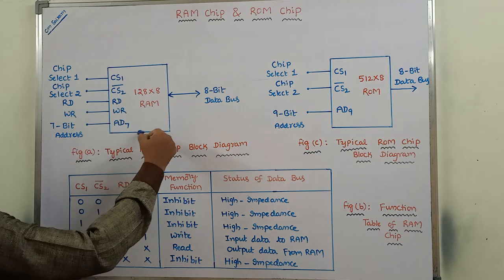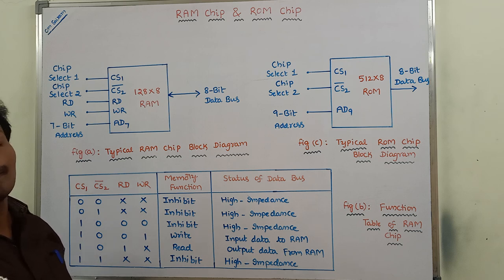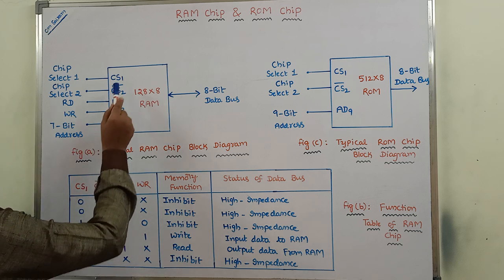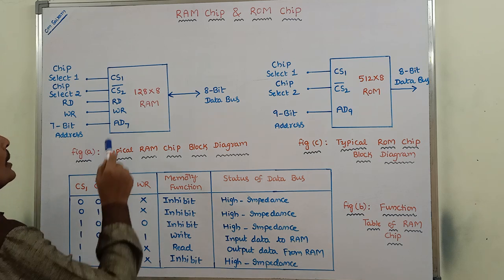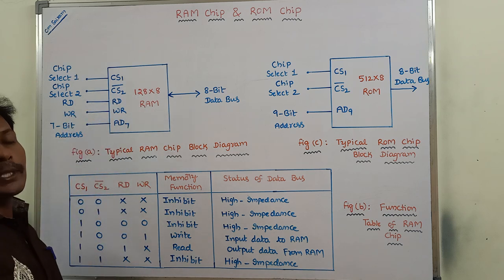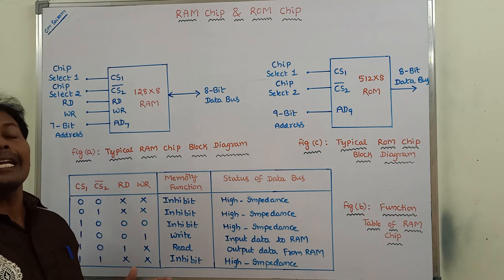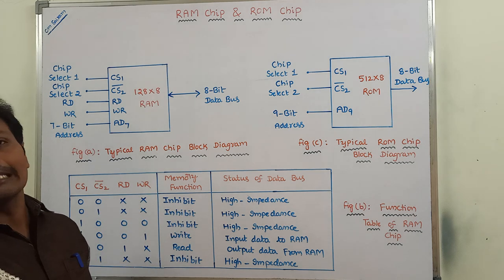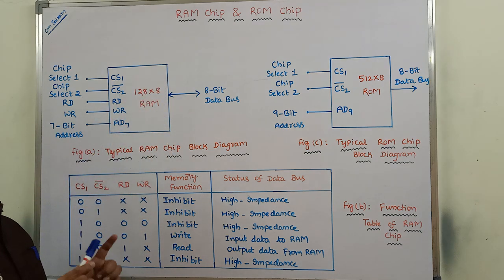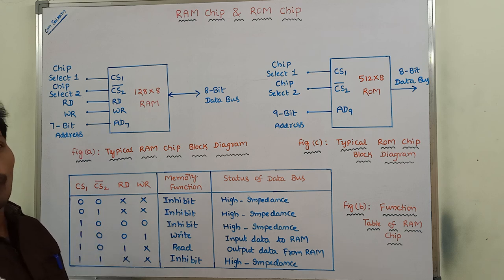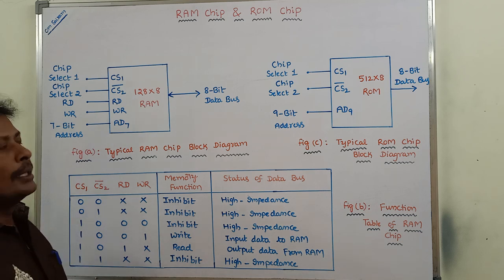The RAM chip contains 5 inputs. The first two inputs are chip select control inputs, denoted by CS1 and CS2 bar. These chip select control inputs are used for enabling the RAM chip only when it is selected by the CPU. So for enabling the RAM chip, we have to use these two chip select control inputs, CS1 and CS2 bar.